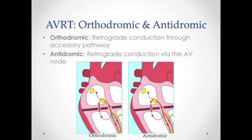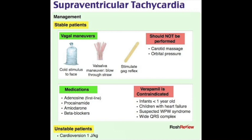SVT manifestations: symptomatic — palpitations, dizziness, fatigue, dyspnea, chest pain. Unstable — hypoperfusion leading to hypotension, altered mental status, refractory chest pain. EKG: orthodromic (95%) — regular, very narrow complex tachycardia, no discernible P waves due to rapid rate. Mnemonic: if you can't tell if the bump is a P or a T, it's SVT. Antidromic (5%) — regular, wide-complex tachycardia mimicking ventricular tachycardia. Heart rate over 100, usually regular narrow QRS.